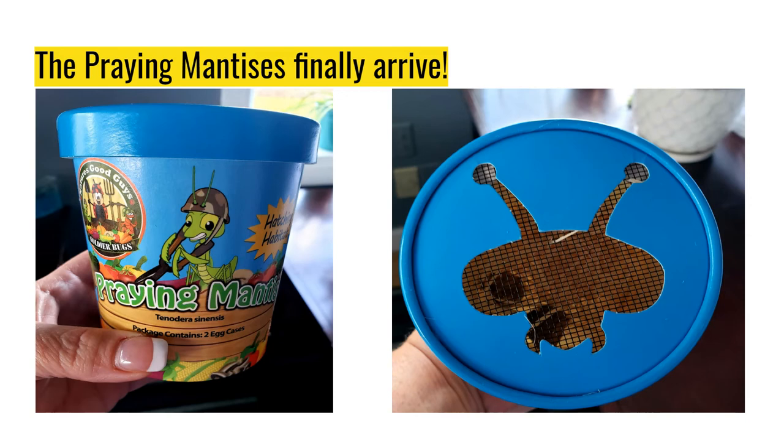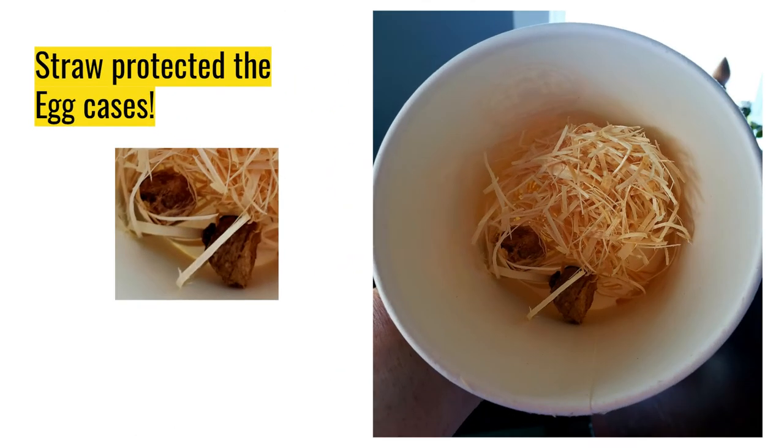The praying mantises finally arrive and here they are. They come in this really cool case. So as you guys can see here, it's called the praying mantis hatching habitat. You could leave that in here and let them hatch in this little cup. But we give them a lot more room in the pagoda so we take them out. So as you can see, they're down there inside. So let's take a closer look at them. The straw inside the cup helps protect the egg cases and keeps them safe while they're shipping to me. So as you can see in here, we do have two.